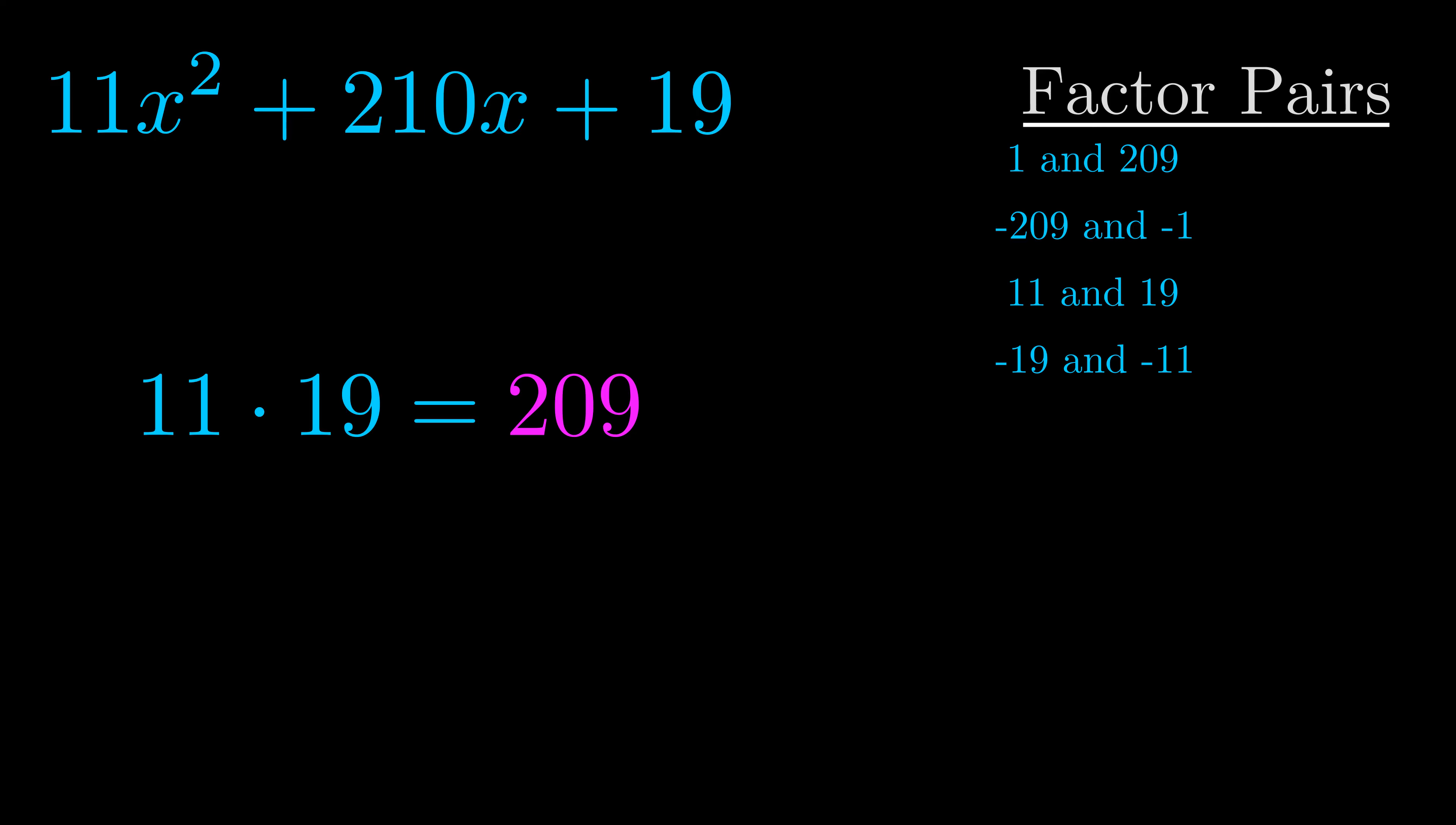Now once you have these factor pairs, the goal is to find which of these pairs adds to the b value.